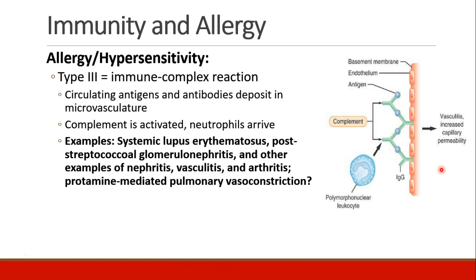A type 3 reaction is called an immune-complex reaction. This is where the antigen and the antibody bind together, and then this complex deposits into the microvasculature. Then complement and neutrophils arrive, and we get clumping which damages the capillaries. Examples include lupus, post-streptococcal glomerulonephritis, other nephritis, vasculitis, and arthritis. Some people think that the pulmonary vasoconstriction and pulmonary hypertension we see with protamine could be due to protamine-mediated type 3 immune-complex reactions.